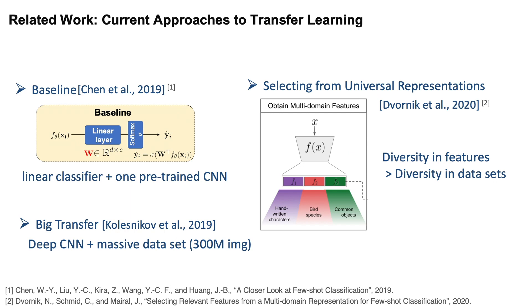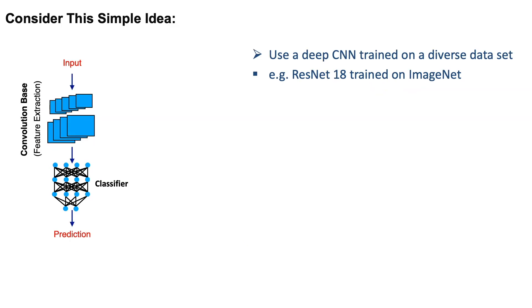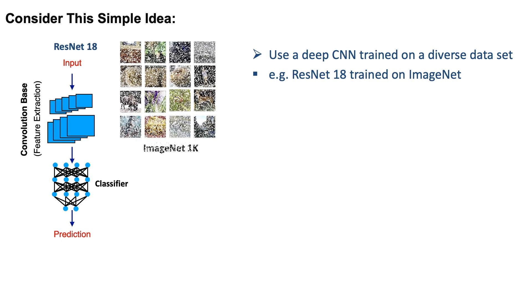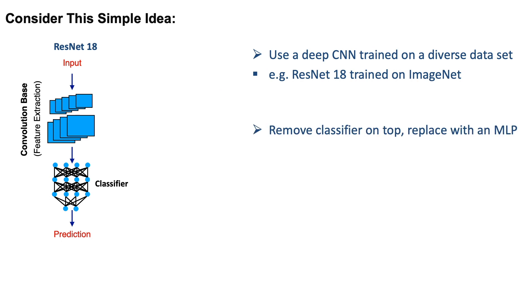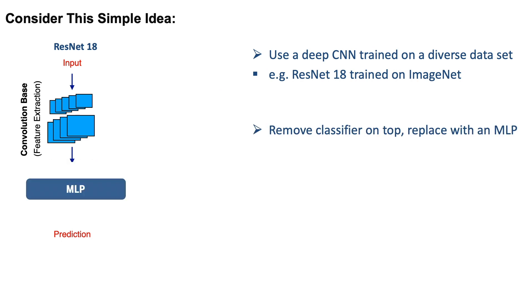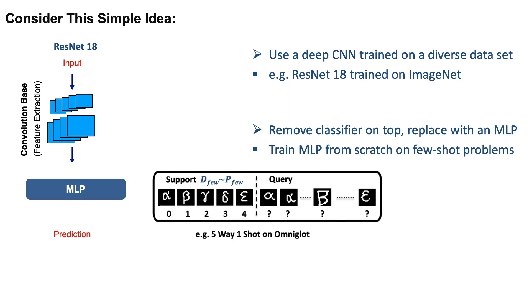The question is: is there an even simpler method? Consider this idea. We use a deep CNN trained on a diverse dataset, such as ResNet-18 trained on ImageNet-1K. After that, we simply remove the classifier on top and replace it with one MLP.